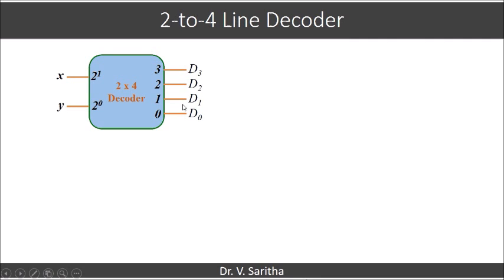When x y is 1, 0 then d2 is 1 and rest of the outputs is 0, and when both are 1, 1 meaning x y are 1, 1 then d3 is 1 whereas d naught, d1, d2 becomes 0.